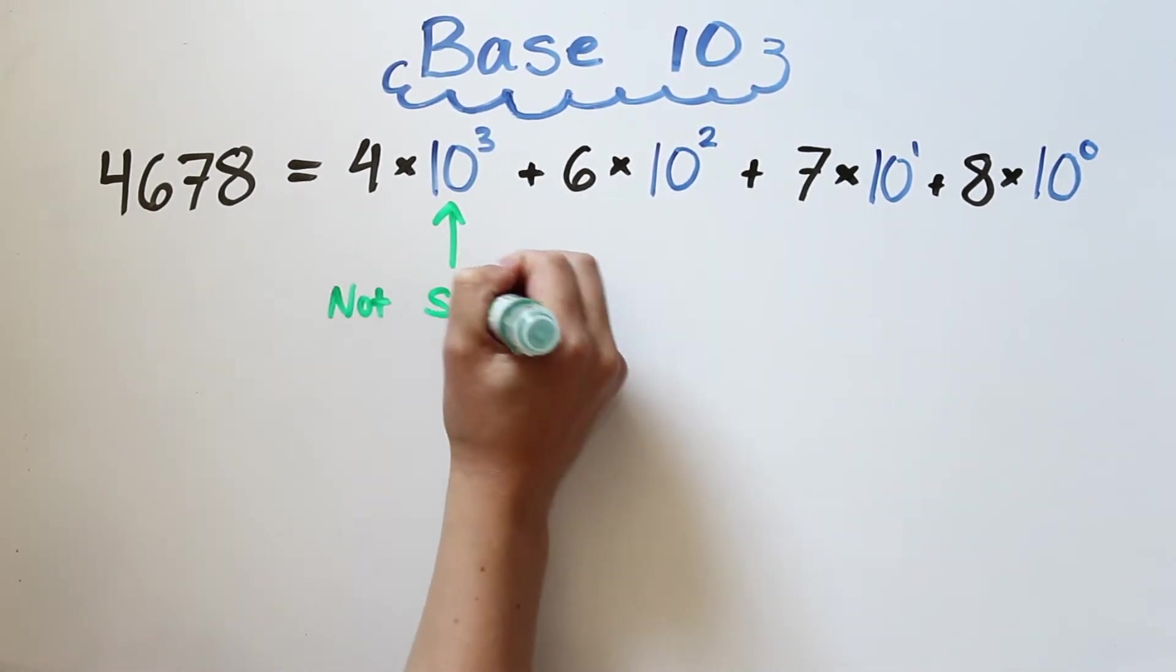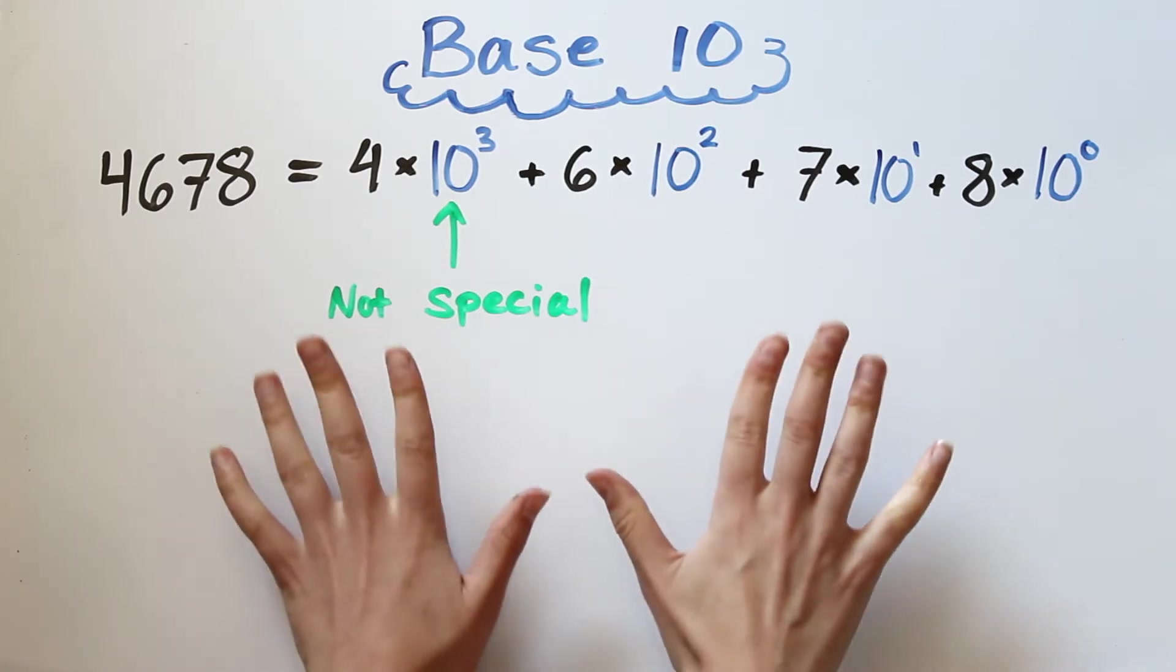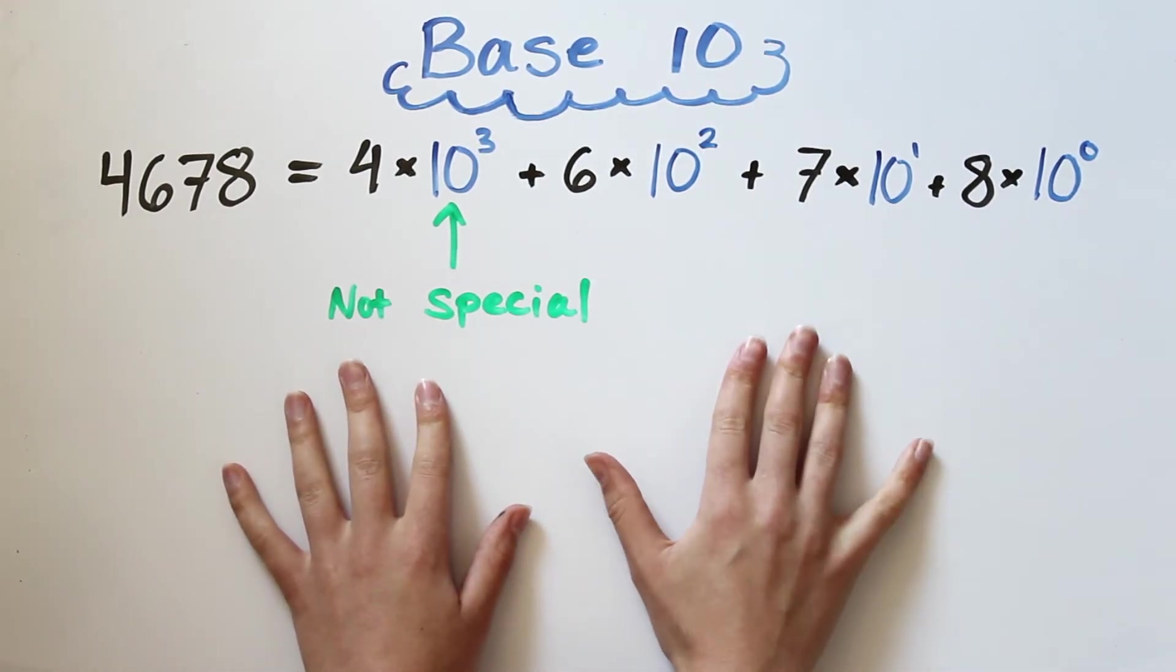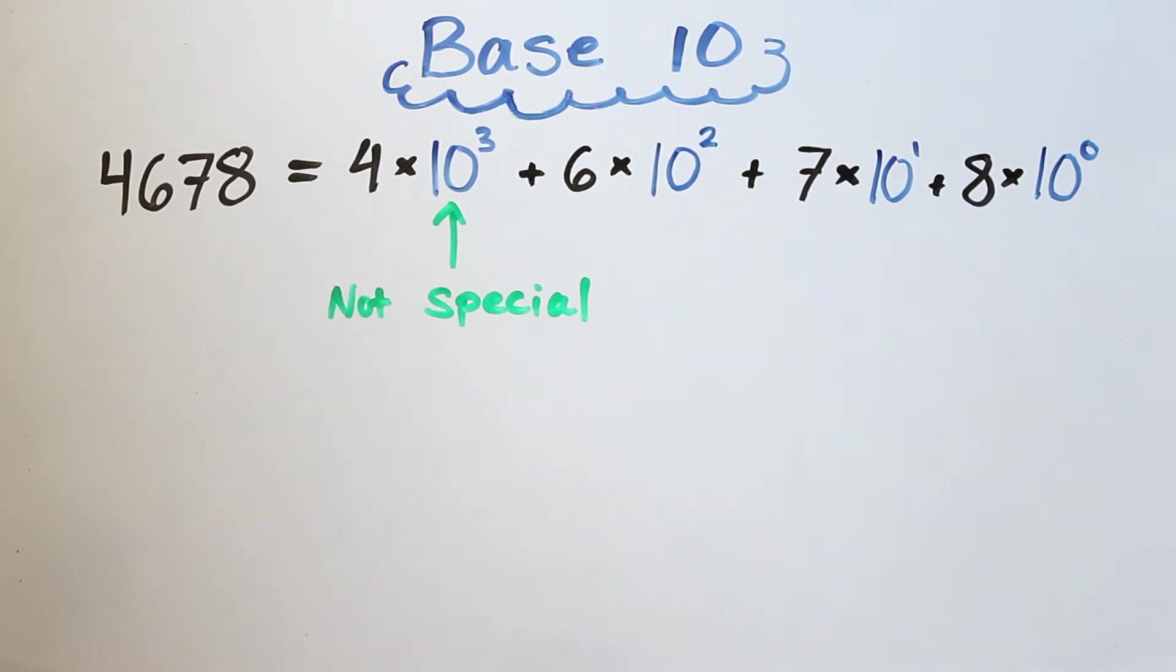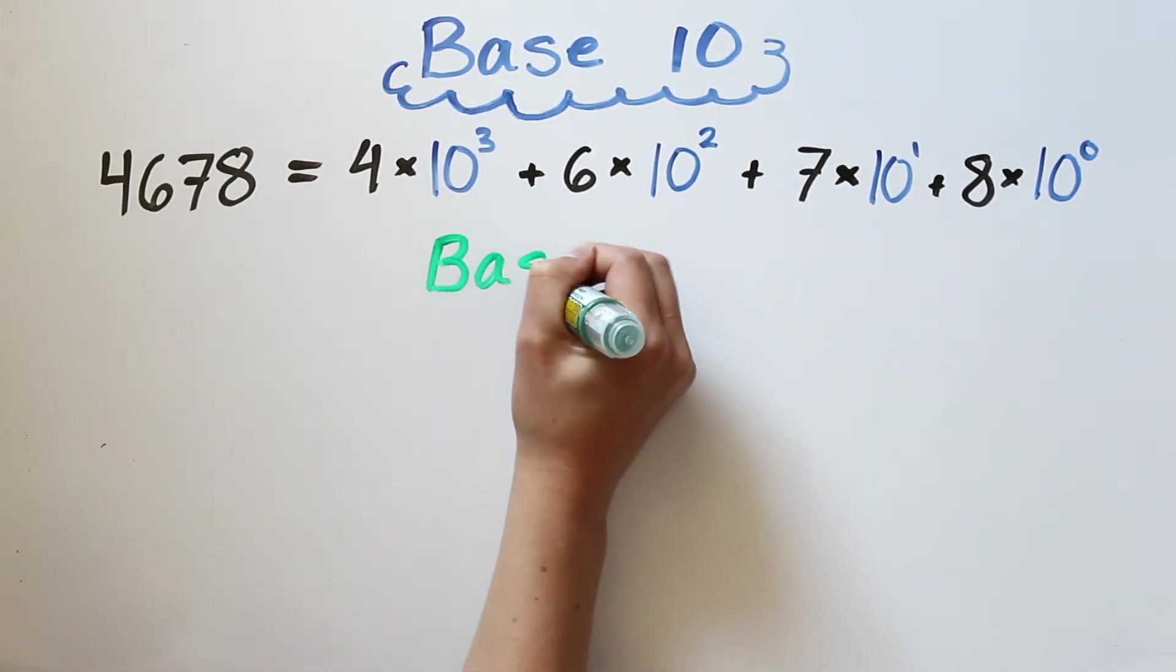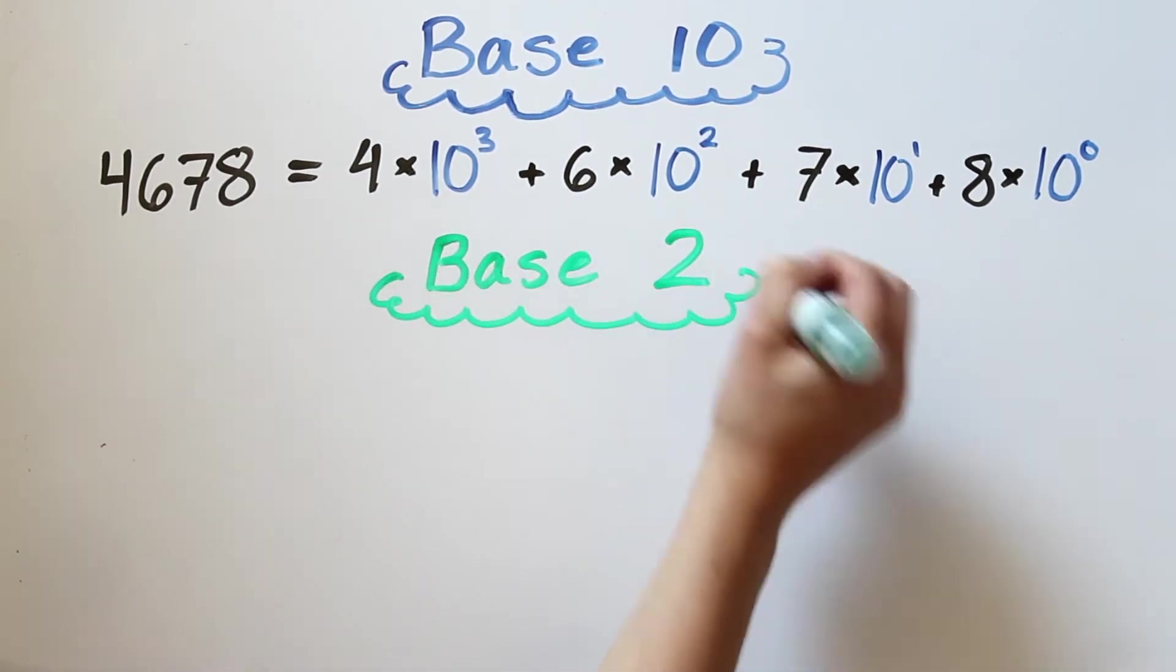But there is nothing special about the number 10 here. I mean, sure, you can make some argument about the fact that humans have 10 fingers, but in an alternate universe where humans have a different number of fingers, it would make just as much sense to have a standard system with base 12 or 9 or 23. Base 2, or binary, is probably the most commonly used other than base 10, since computers use binary to store data.